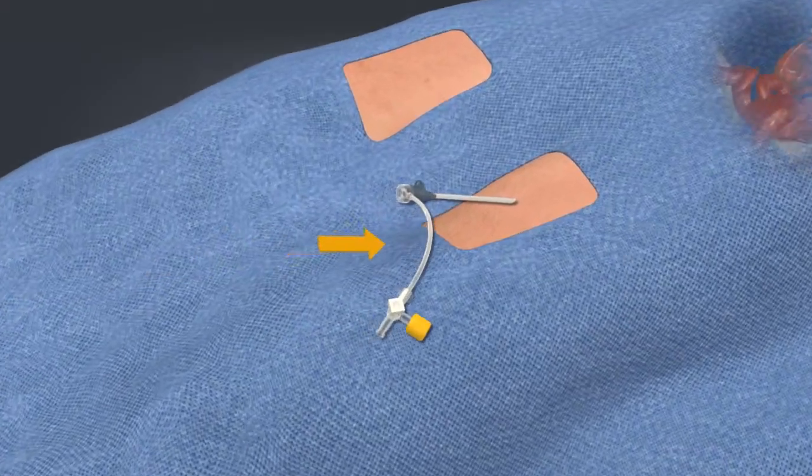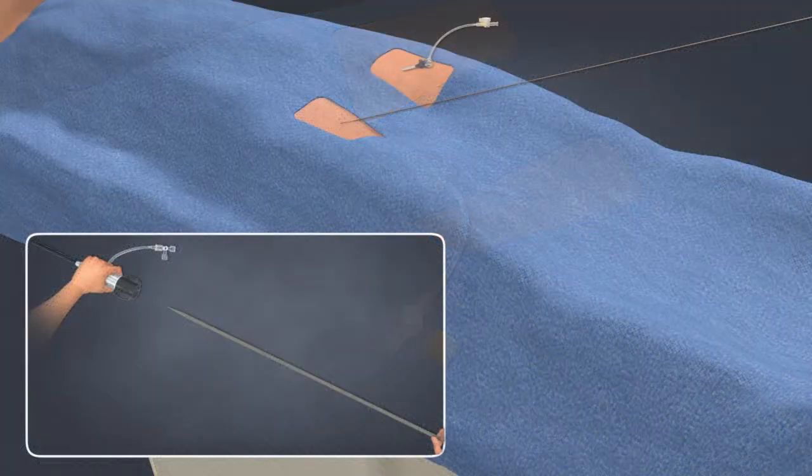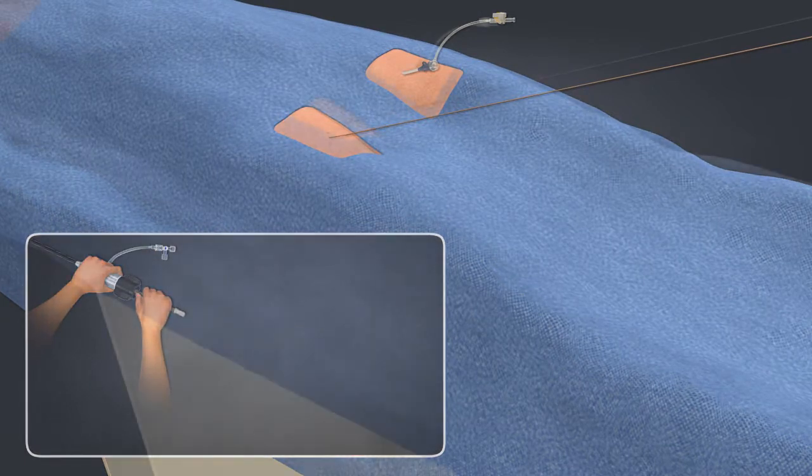Place a 9-French sheath on the contralateral side. Place the dual lumen dilator fully into the introducer sheath.